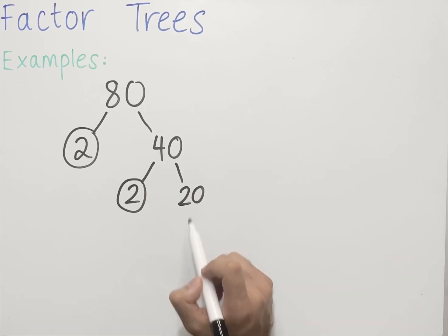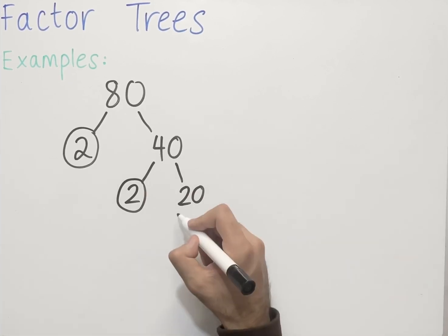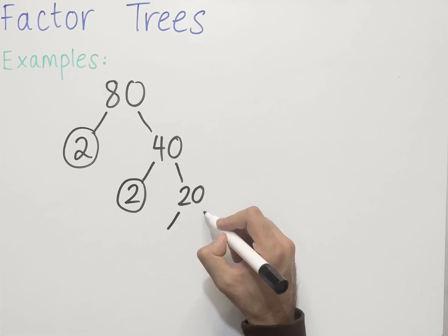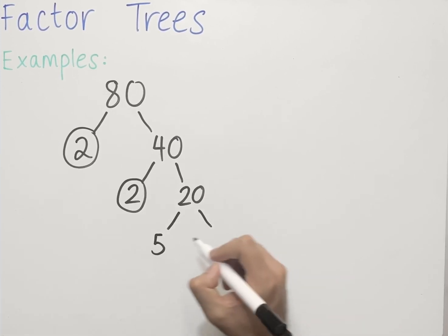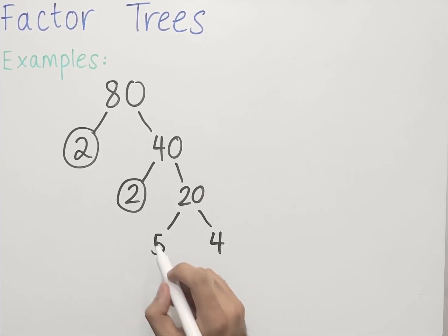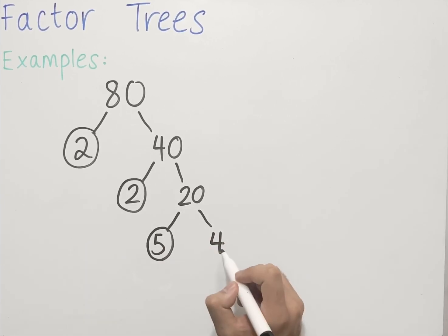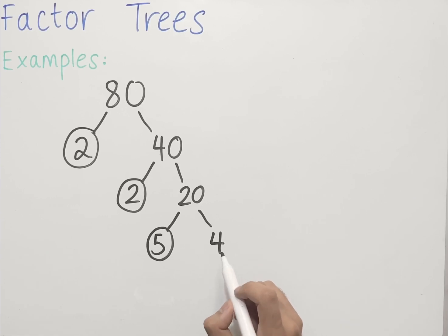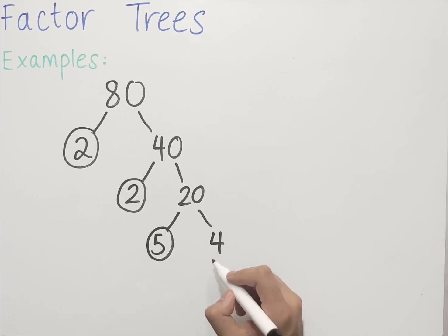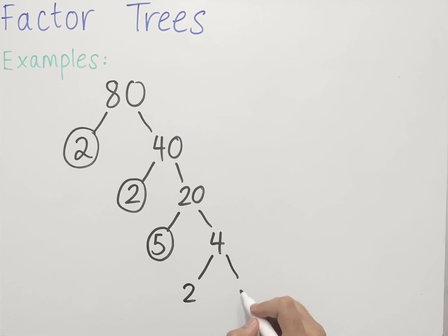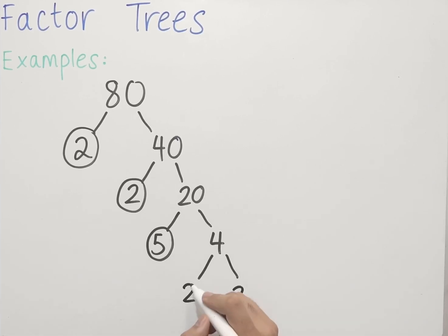Two numbers that multiply to make 20: 5 times 4 gives us 20, so let's label two branches with 5 and 4. 5 is a prime number, so we can circle it. 4 is not a prime number, so we need to factorize it further. Two numbers that multiply to make 4: 2 times 2 gives us 4, so we have two branches with 2 and 2 at the end.